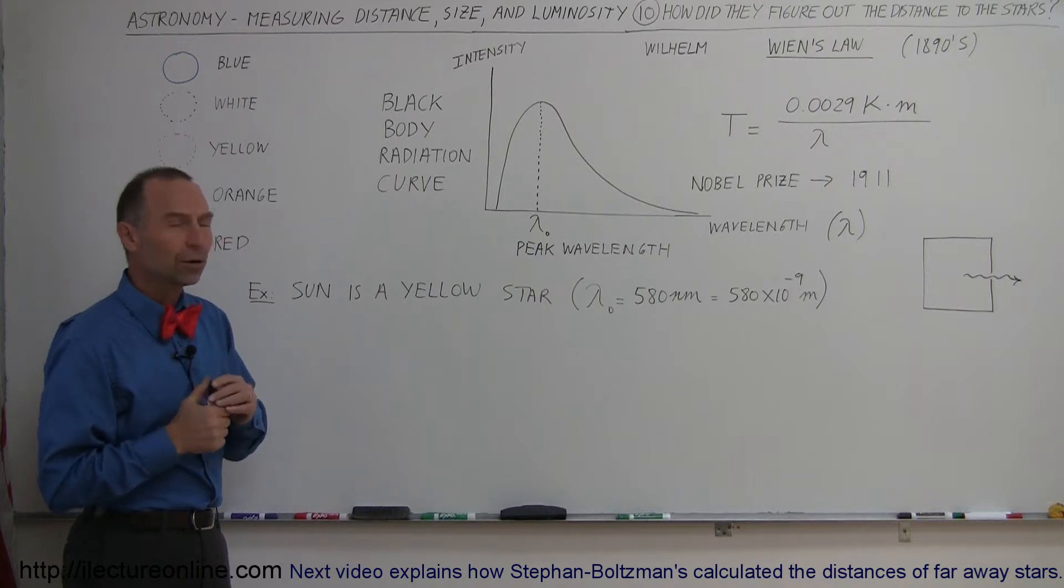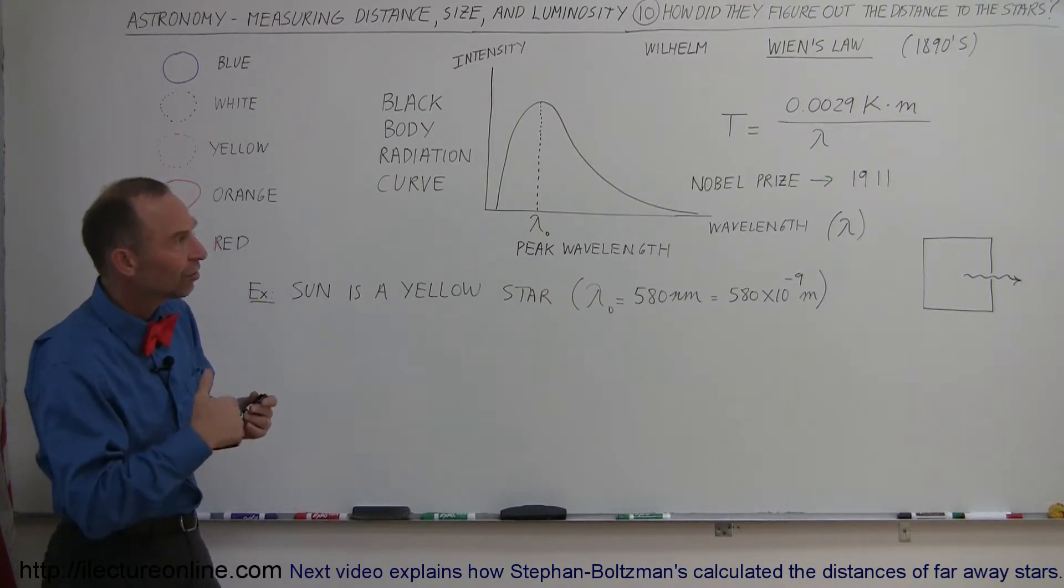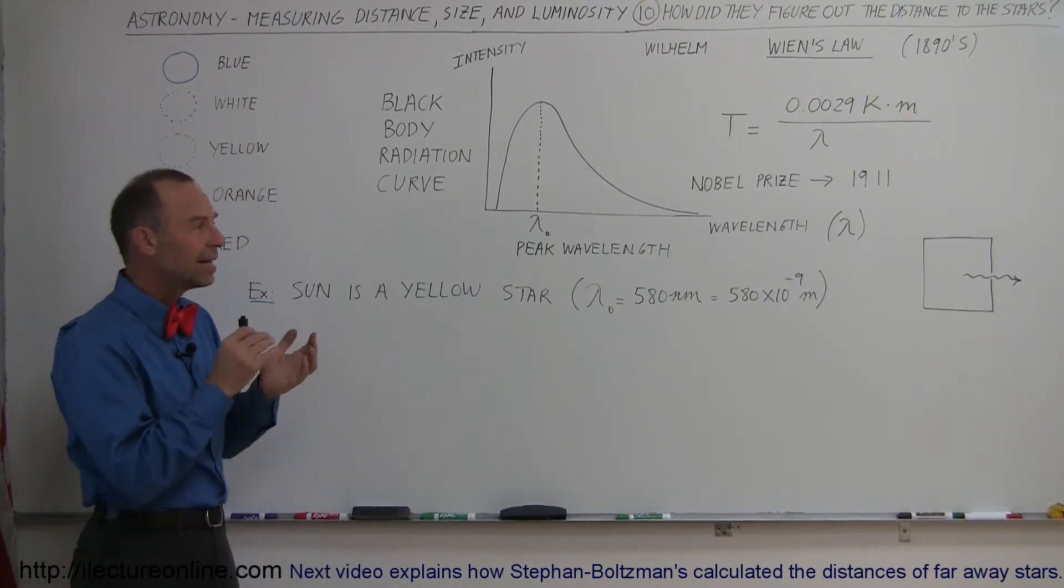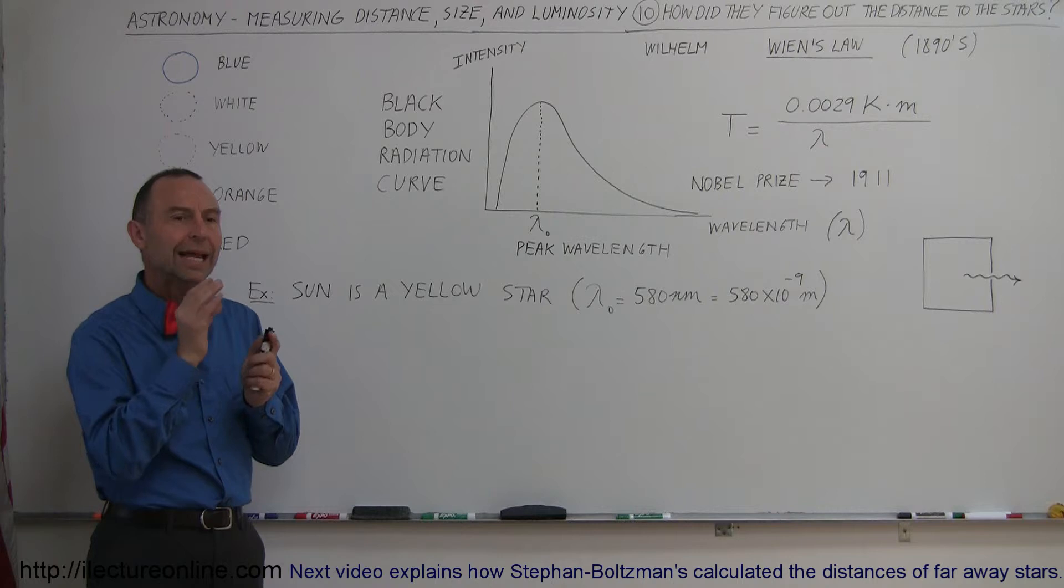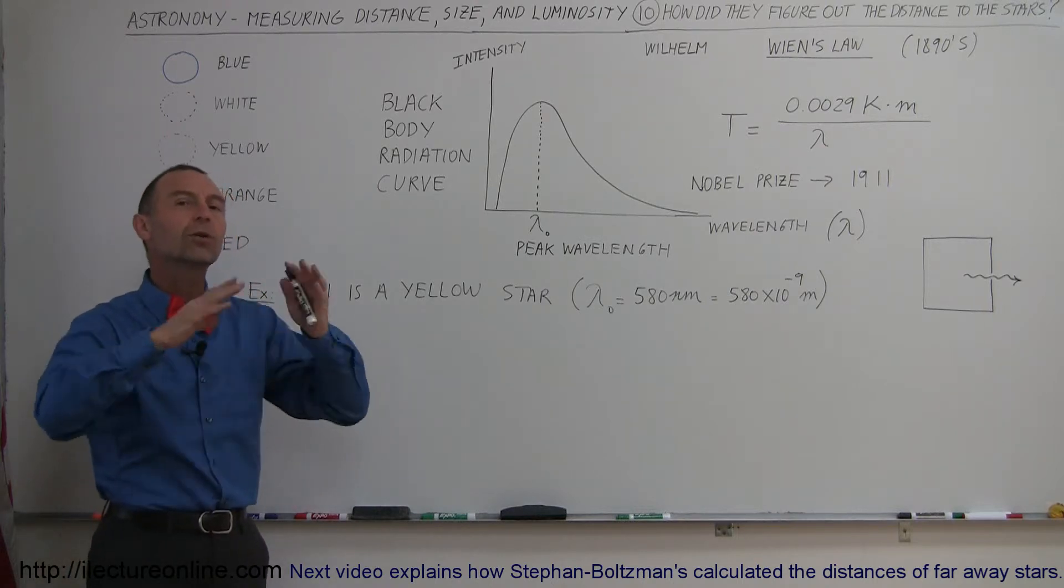So the first thing we want to learn about is what we call Wien's Law. Wilhelm Wien was a physicist slash astronomer slash scientist who was very intelligent, and he discovered that the radiation coming from an object could be determined if we can exclude all the other radiation.